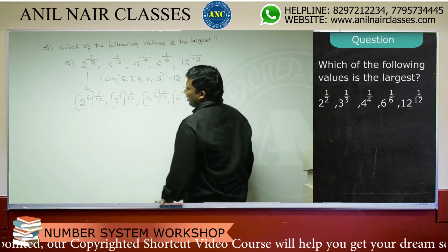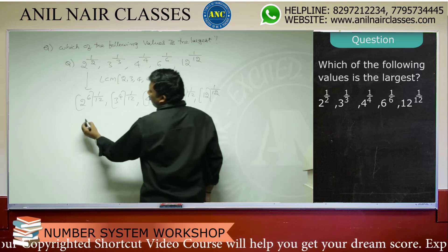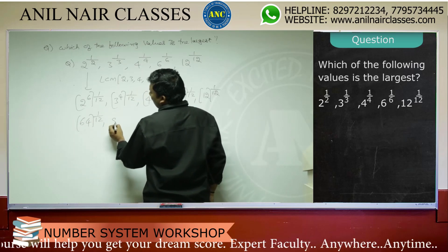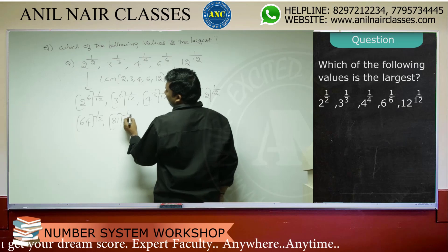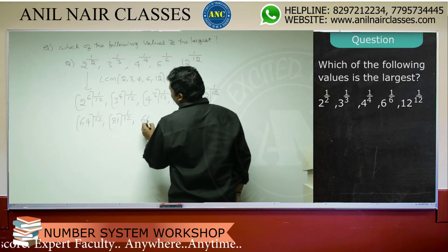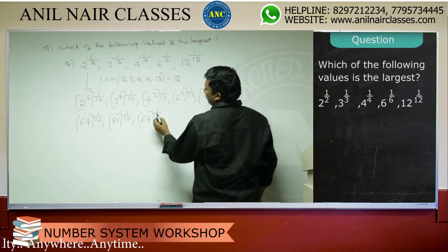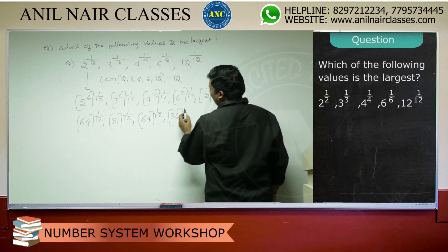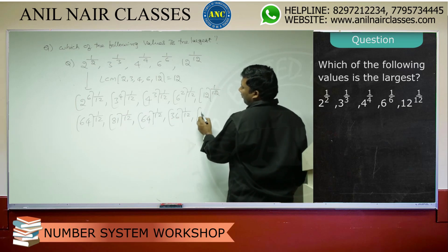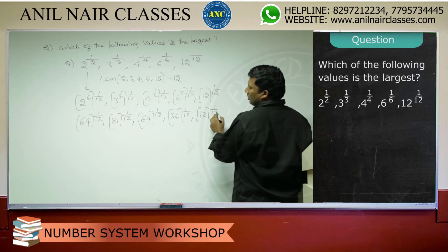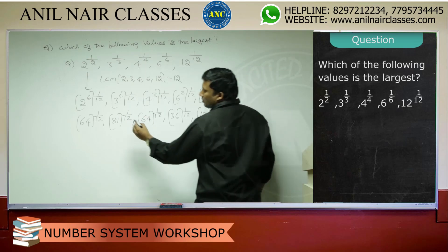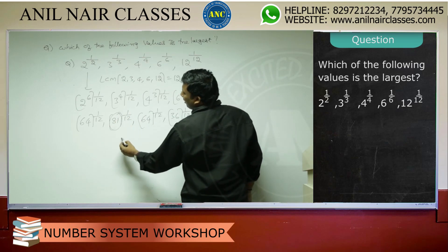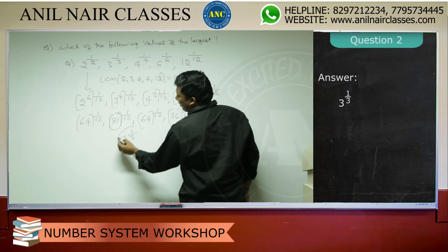This gives us 64 power 1 by 12, 81 power 1 by 12, 64 power 1 by 12, 36 power 1 by 12, and 12 power 1 by 12. All the powers are the same, so the highest base is 81. Therefore, the answer is 3 power 1 by 3.